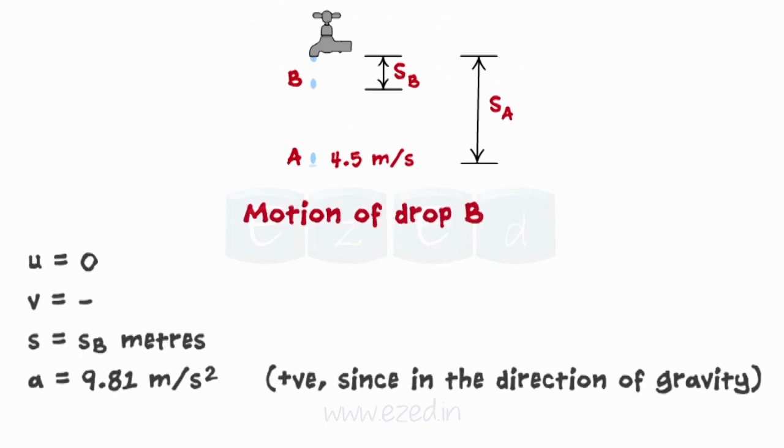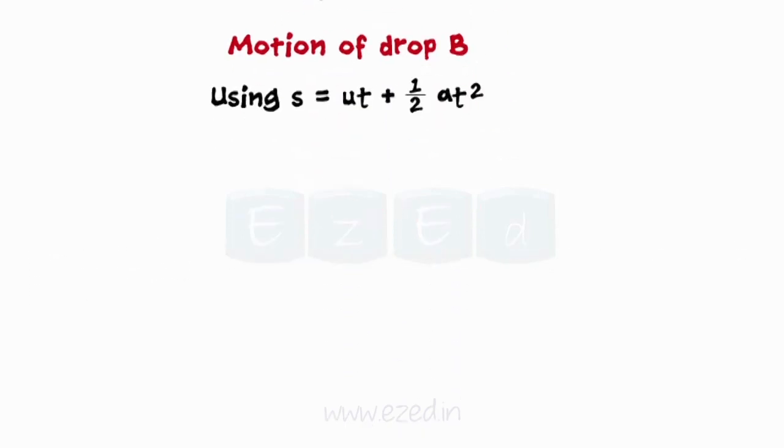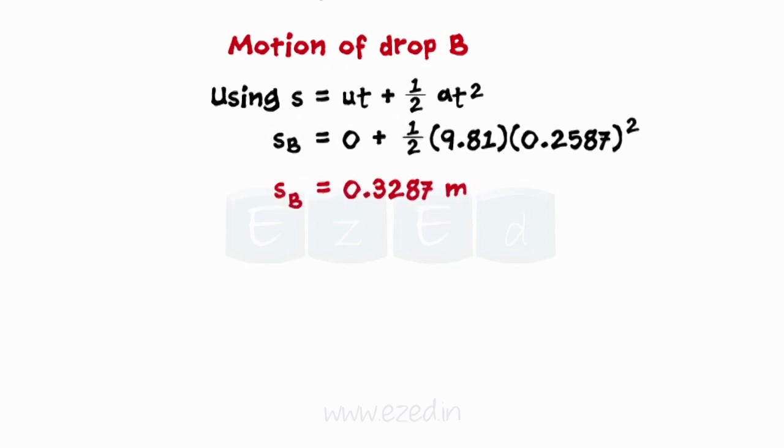Considering the motion of drop B, writing down the initial condition for drop B. On using equation for uniform acceleration motion and substituting the values, we get the vertical height SB.